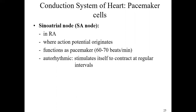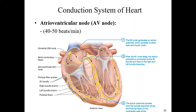The SA node is basically where the action potential originates. We'll trace that action potential through the heart to see how it causes the atria to contract and then the ventricles to contract. There is a second node — the atrioventricular or AV node — located along the border between the right atrium and right ventricle. This beats a little slower, slowing the rhythm to about 40 to 50 beats per minute.